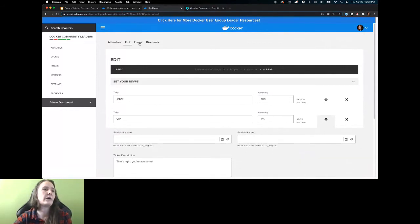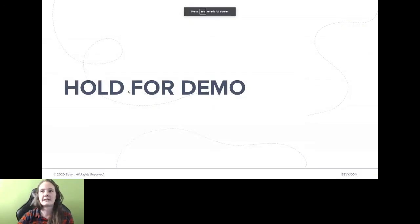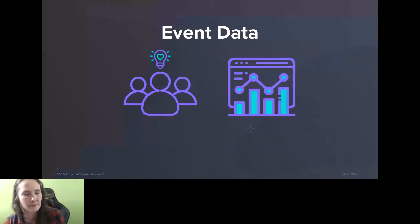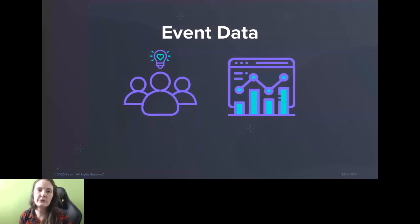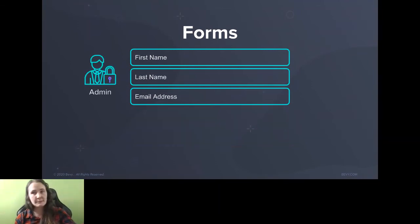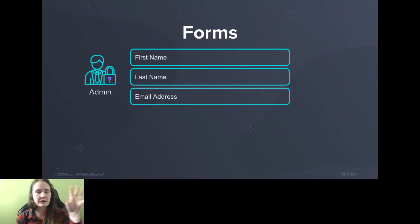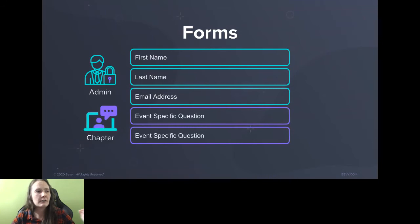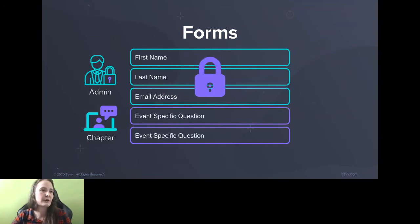That's the basics — that's how you set up an event start to finish. Let's talk about event data, which is really important for you as organizers. Per event, you get to ask your audience specific questions. It's double-layered: the teal/blue ones — we're always going to know first name, last name, and email address of your attendees; that's controlled at the administrator level. Then for you, you can ask event-specific questions per event: how did my speaker do? What topics do you want to see next?